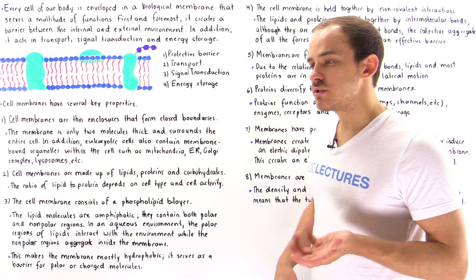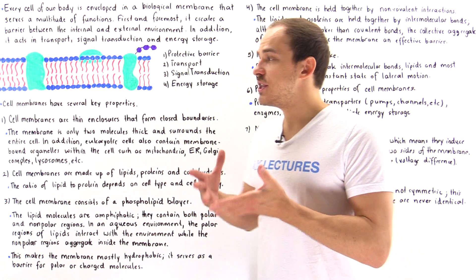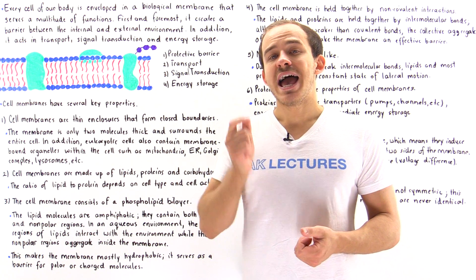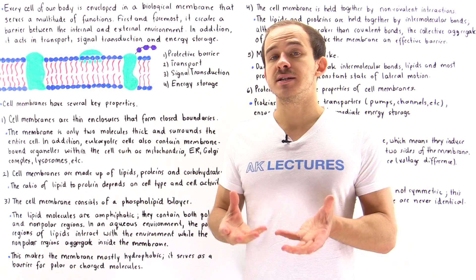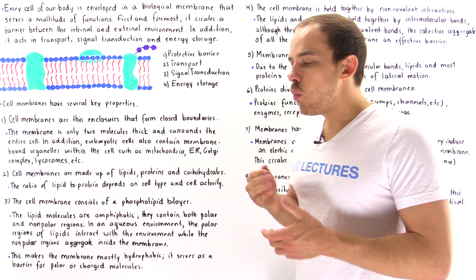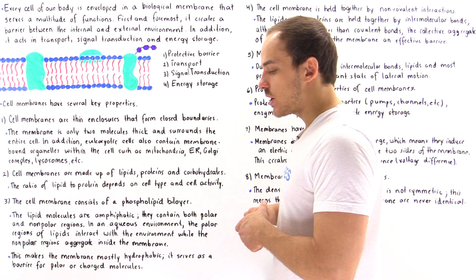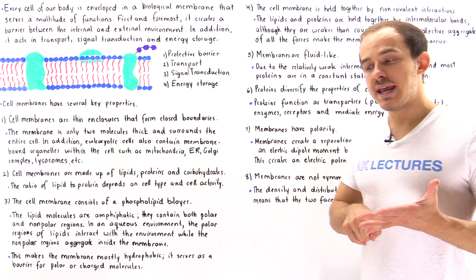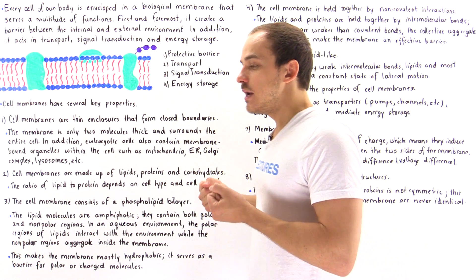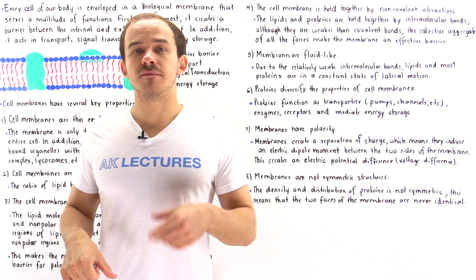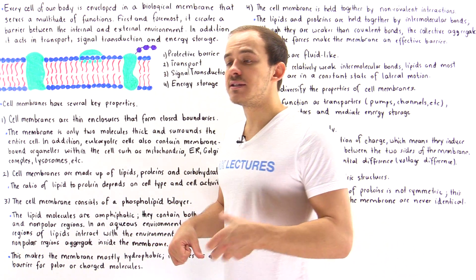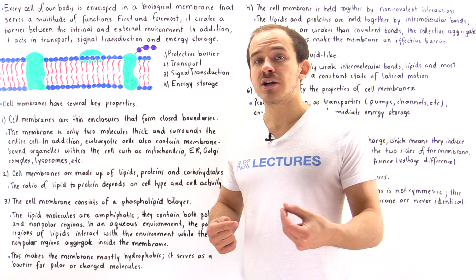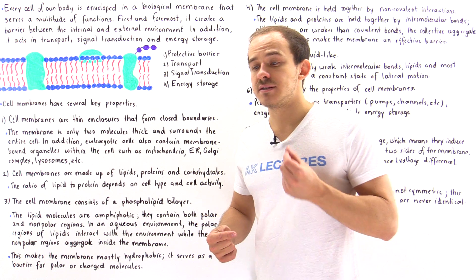To demonstrate the importance of lipids, let's focus in this lecture on the cell membrane. The cell membrane is a structure that encloses every single cell inside our body, and it consists predominantly of lipids. Function number one is it creates a protective barrier between the outside and the inside environment of the cell. It basically prevents toxins and other pathogenic agents from entering the cell, and it prevents molecules from spontaneously exiting the cell.